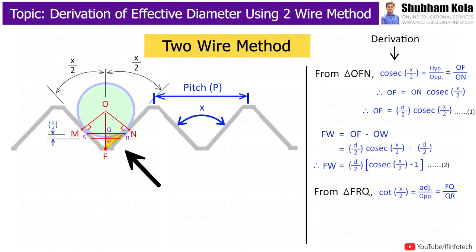And again, if you take triangle frq, where cot alpha by 2, I am going to take, which is adjacent side upon opposite side, that is Fw by qr. Therefore, Fw is equal to qr cot alpha by 2.